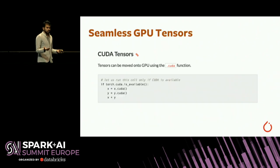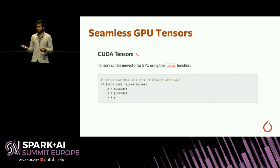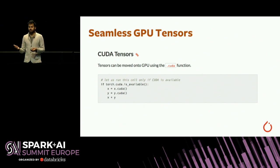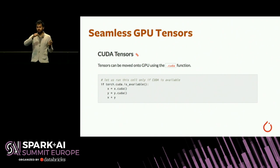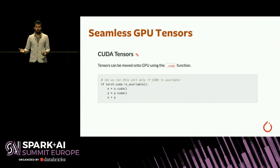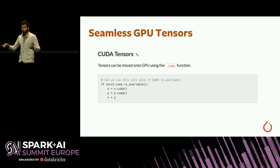PyTorch has strong support for GPU acceleration. On any tensor, you can call .cuda() and your tensor's memory is moved to the GPU device you have. Any subsequent operations are then done on the GPU, and generally they're much faster because you have nicely parallelizable operations.